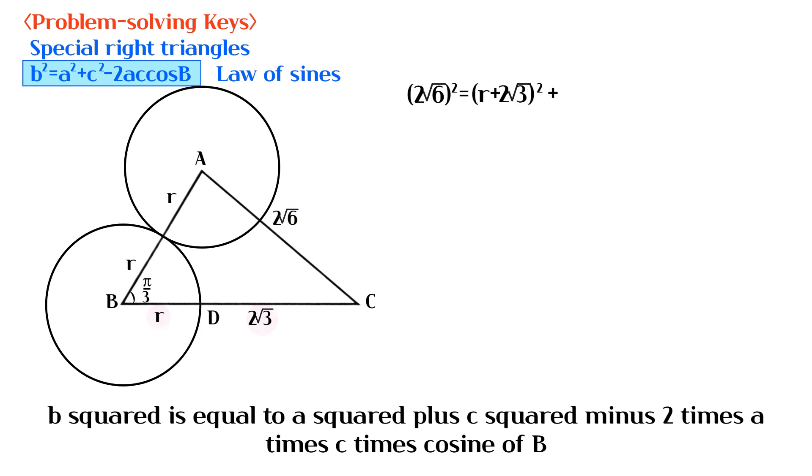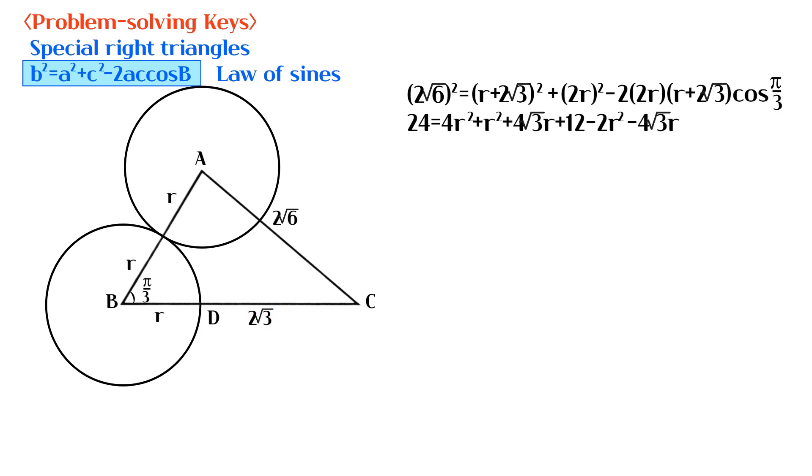b² equals a² plus c² minus 2ac cosine B. We have determined that r equals 2.